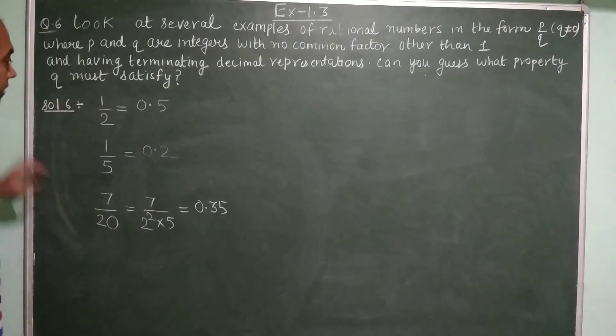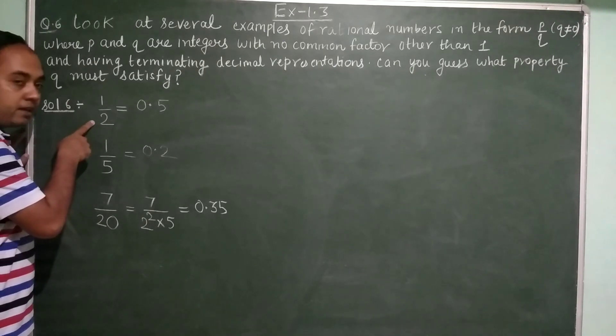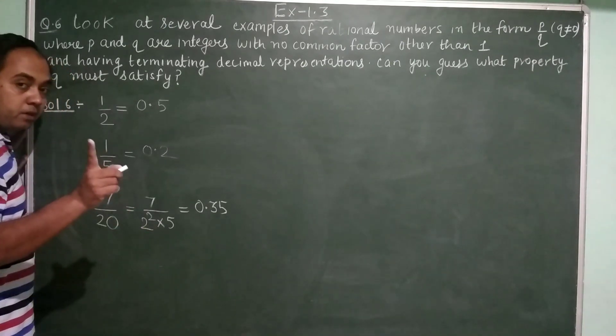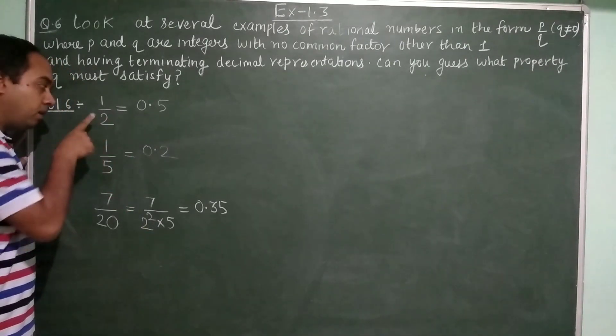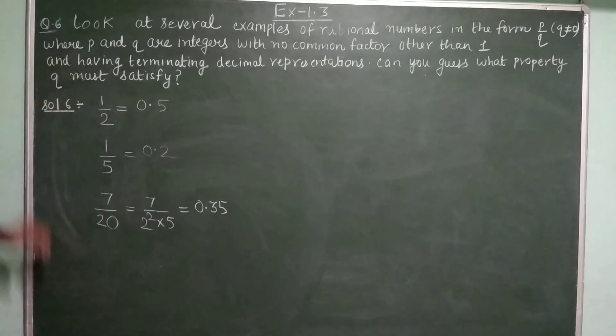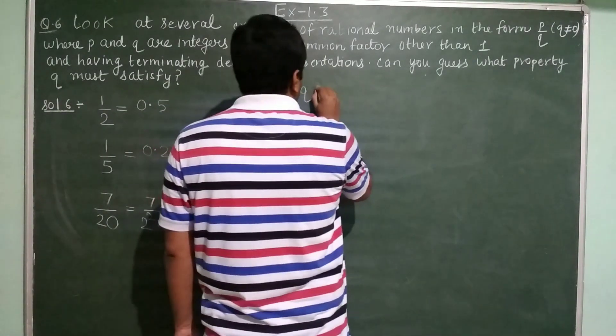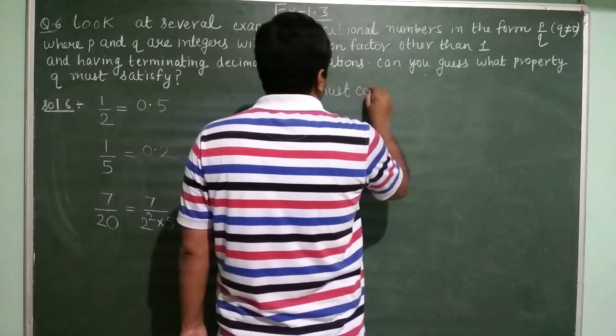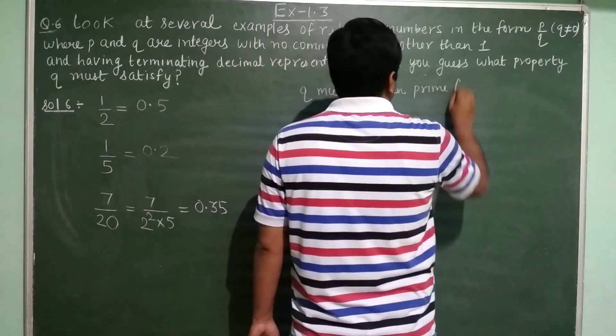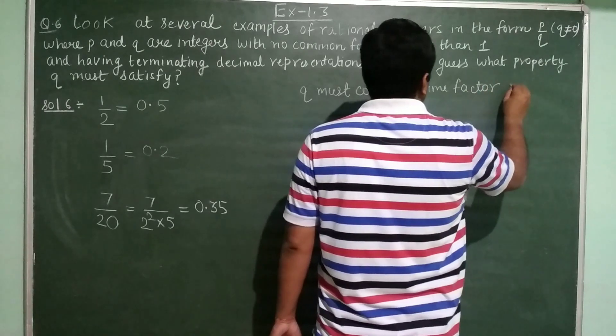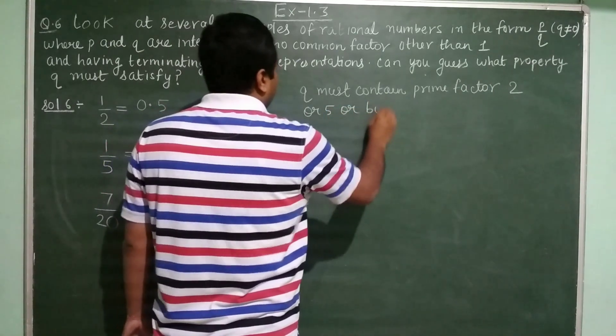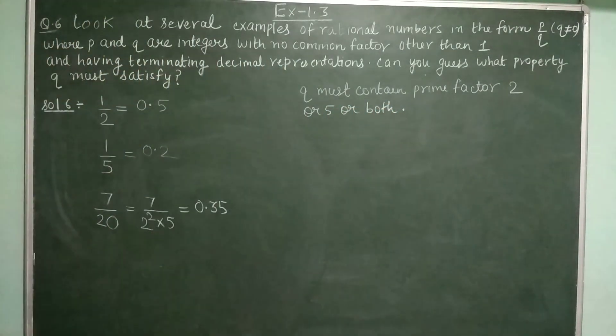So what property q must satisfy? q must contain prime factor of 2 or 5 or both. q must contain only prime factor of 2 or only prime factor of 5 or both 2 and 5. So you can write: q must contain prime factor of 2 or 5 or both. Hope you have understood.